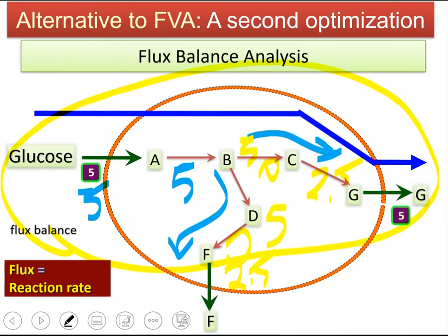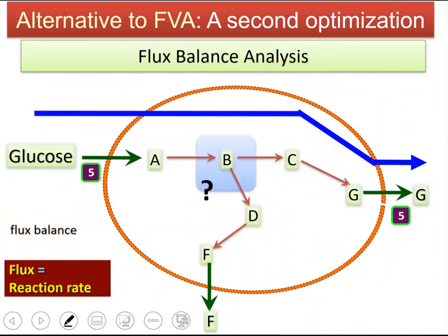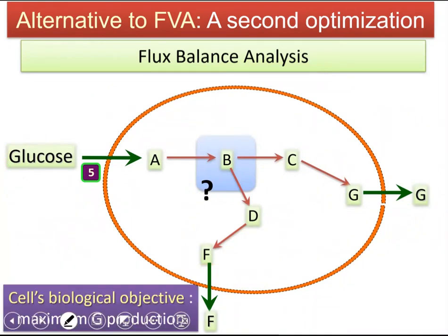But if I am given an objective function — let's say I was told that this cell is trying to maximize its production of G — thanks to this objective function, among all those possible solutions that arise because of the branching after B, I can choose the one which gives me the optimum solution for G.